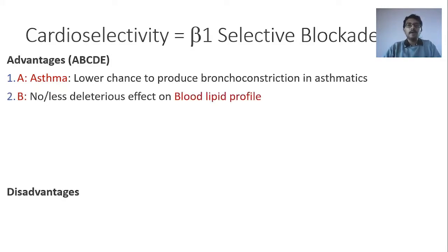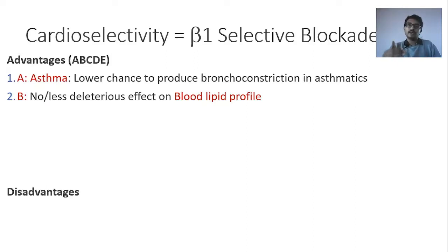B is for blood lipid profile. Cardioselective beta-blockers produce no or less deleterious alteration of the blood lipid profile. Beta-3 receptor activation normally causes lipolysis, releasing free fatty acids for energy. Blockade of beta-3 receptors — as seen with non-selective beta-blockers — reduces lipolysis, leading to harmful alteration of the blood lipid profile: increase in LDL cholesterol and decrease in HDL cholesterol. Cardioselective beta-blockers do not block beta-3 receptors, so there is no or less deleterious effect on the blood lipid profile.